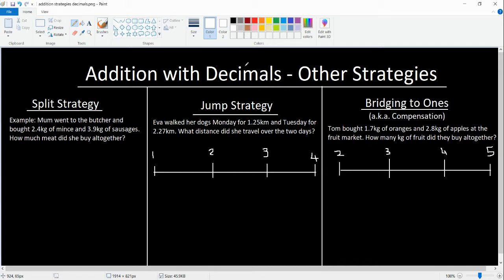Three different strategies that are different to the algorithm strategy. Let's work through these quickly. The first is our split strategy. Let's look at our problem: Mum went to the butcher and bought 2.4 kilos of mince and 3.9 kilos of sausages. How much meat did she buy all together?